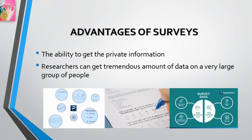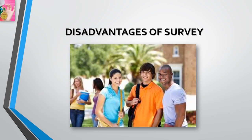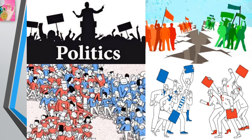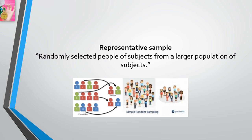That is the big advantage of surveys — aside from their ability to get private information, researchers can get a tremendous amount of data on a very large group. Of course there are disadvantages. One disadvantage is that researchers have to be very careful about the group of people they survey. For example, if they want to know what college freshmen think about politics, they can't ask every single college freshman in the entire United States, but they can select a random sample from the group.